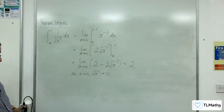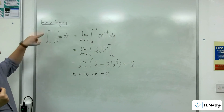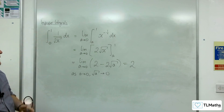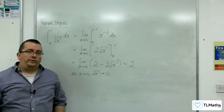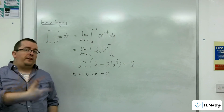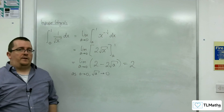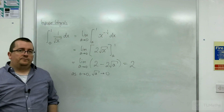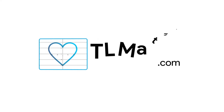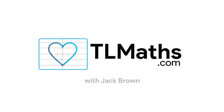So it turns out that the integral between 0 and 1 of 1 over root x is actually equal to 2. This one is defined — it is convergent.